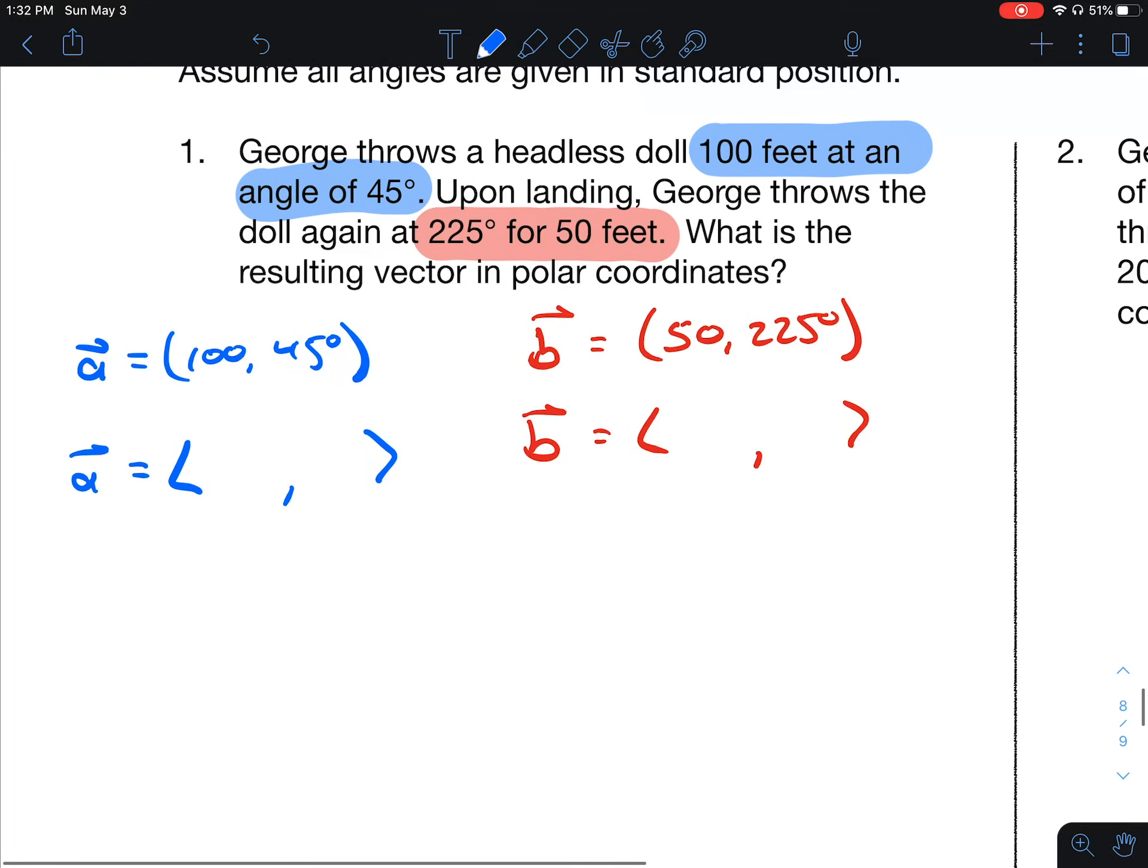So vector A, 45 degrees is in quadrant one. It's a special right triangle. If the hypotenuse is 100, the leg is that divided by the square root of 2.